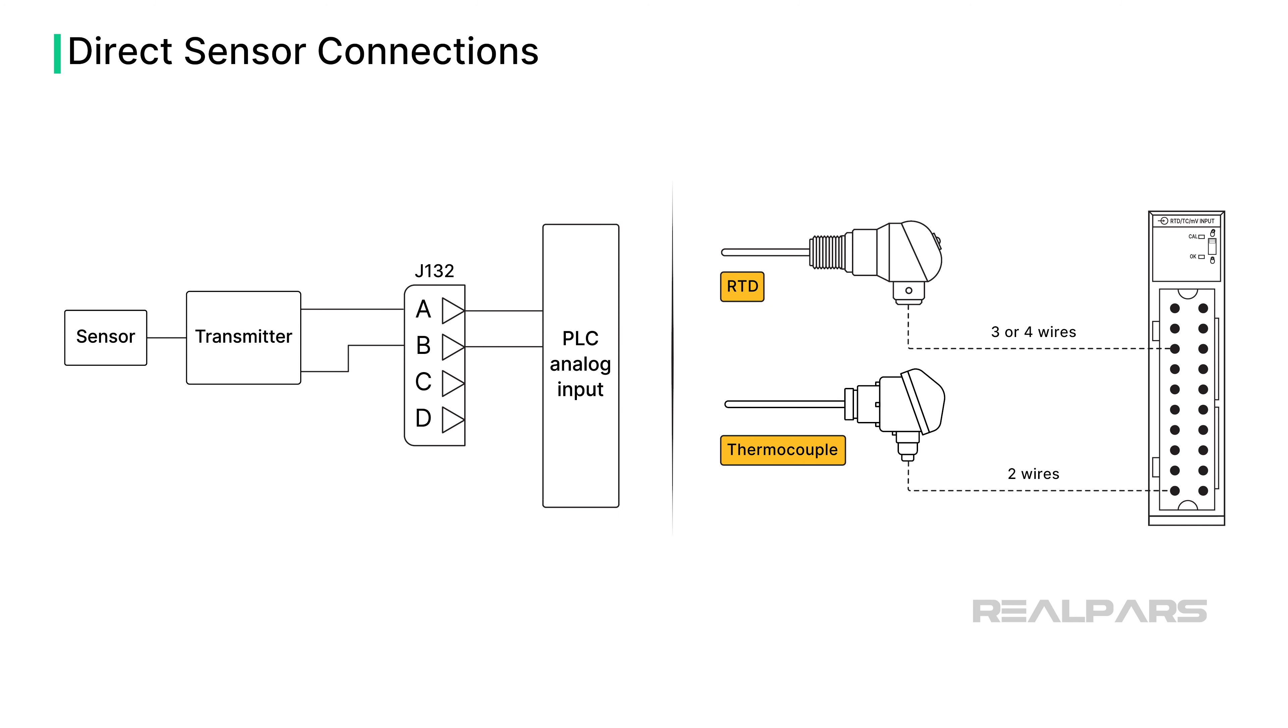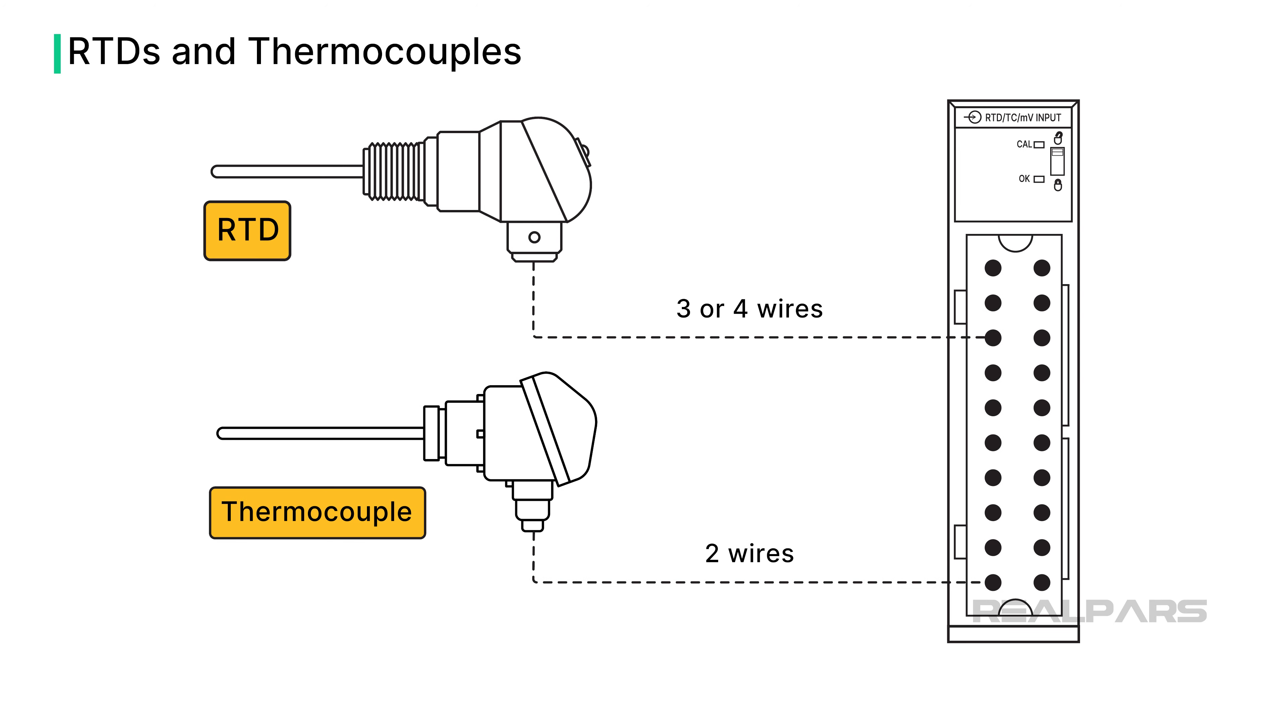As illustrated earlier, temperature sensors can be connected to a transmitter, producing an analog signal of 4 to 20 milliamps, representing a temperature range. RTDs and thermocouples can be directly connected to a PLC analog input module, such as the Allen-Bradley ControlLogix IRT-8i, eliminating the need for a transmitter.